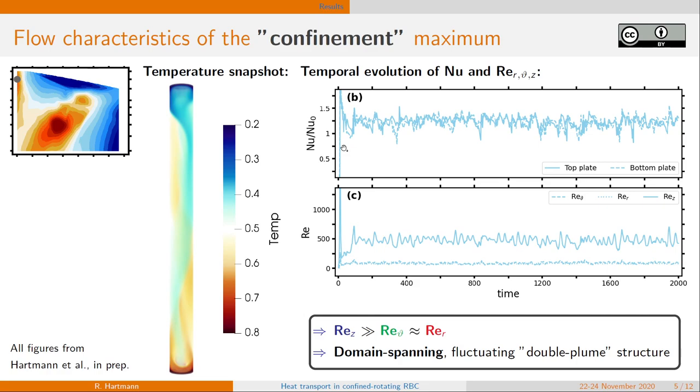And from the temporal evolution of the heat transport and the RMS velocity components, we can clearly see a fluctuating behavior of this. And from the RMS velocity components, we can see some flow characteristics. The vertical motion is predominant here over both horizontal components, which have a very small contribution in this case.